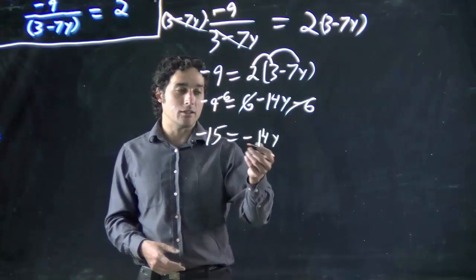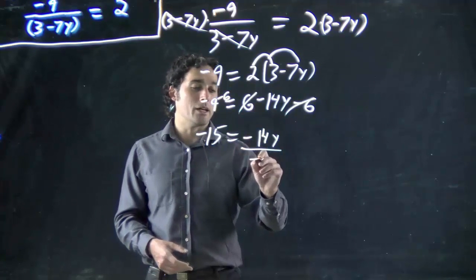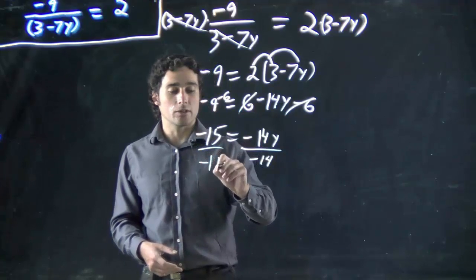Want to get y on its own? Well, got to get rid of this. It's multiplying, so I divide by minus 14. As always, same on both sides.